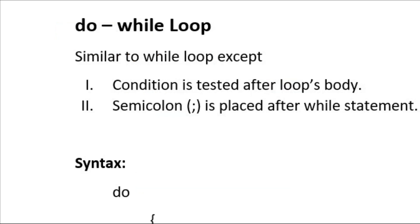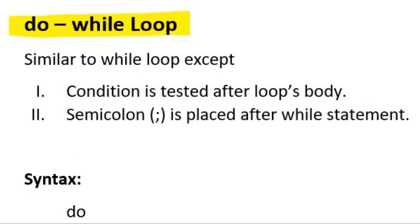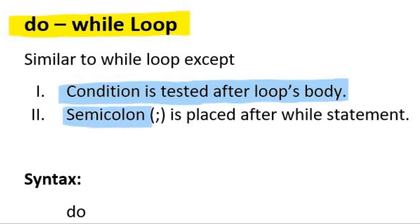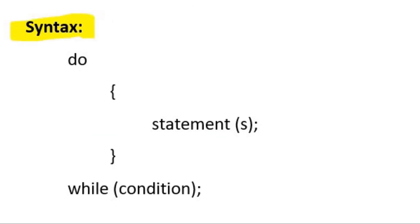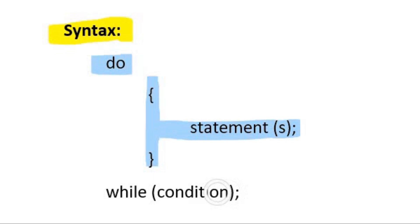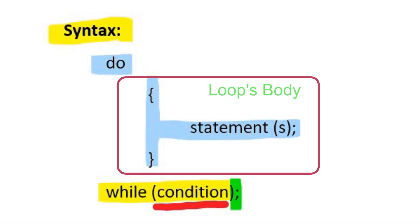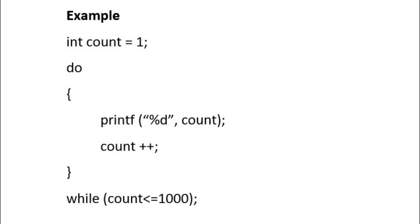Now let's move to the do while loop. The do while loop is very similar to the while loop except two things. Number one, the condition is tested after the loop's body. The second difference is a semicolon is placed after the while statement. Let's see the syntax. First we write the do keyword in small letters, then comes the body of loop which may contain one or multiple statements. The condition is tested after the body of loop. The syntax for writing the while statement is similar to the while loop, but at the end we put a semicolon. Whether the condition is true or false, the body of the do while loop will be executed at least once.